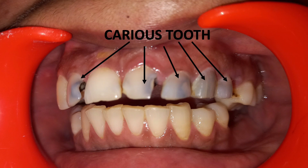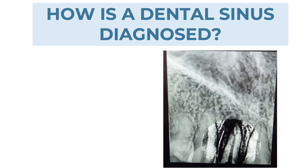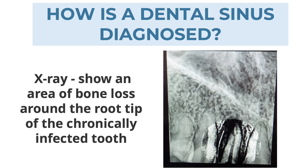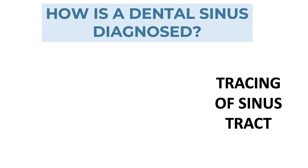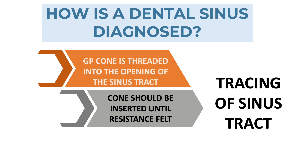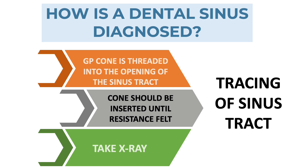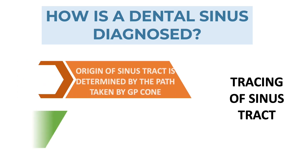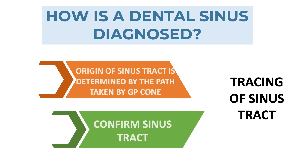Now, how will you diagnose whether it's a sinus tract or not? There are various ways to diagnose or trace the sinus tract, but the most common is the X-ray or radiographic investigation. An X-ray shows an area of bone loss around the root tip of a chronically infected tooth. To trace the sinus tract, a GP cone is threaded into the opening of the sinus tract and inserted until resistance is felt, then an X-ray is taken. The origin of the sinus tract is determined by the path taken by the GP cone.